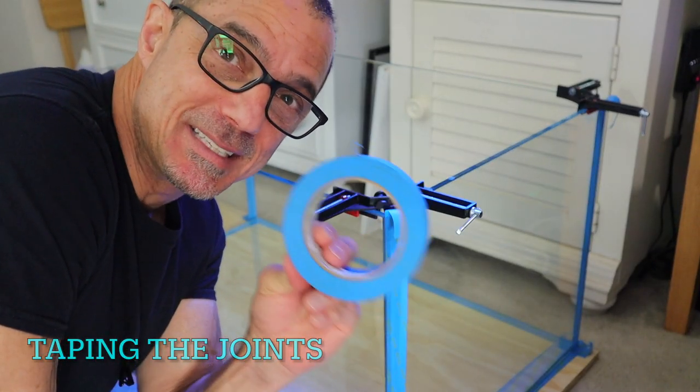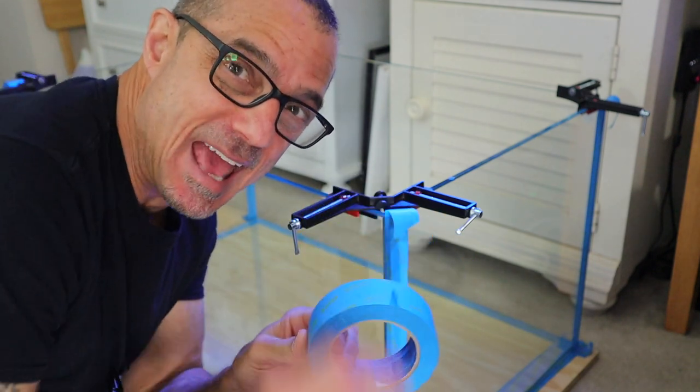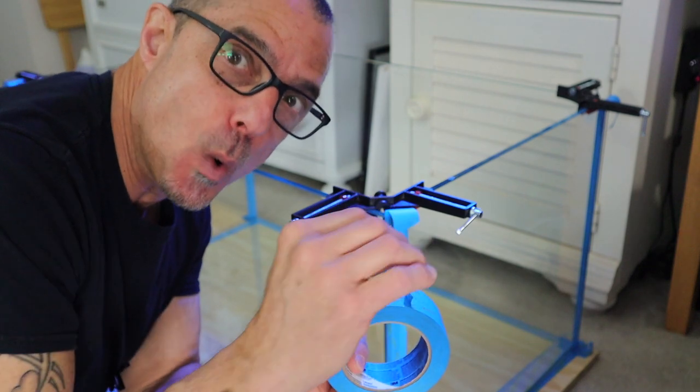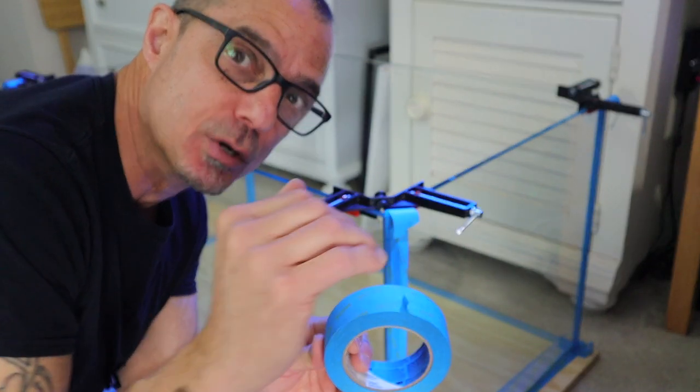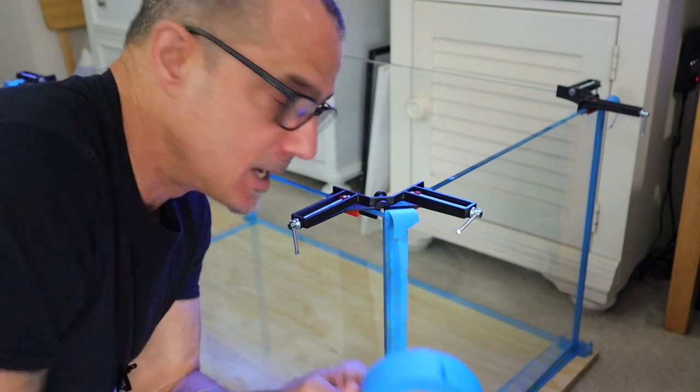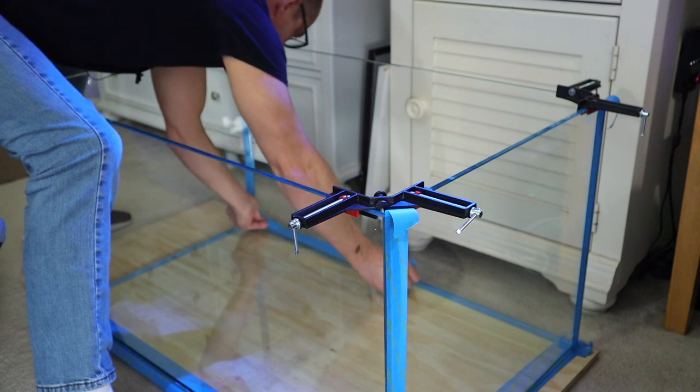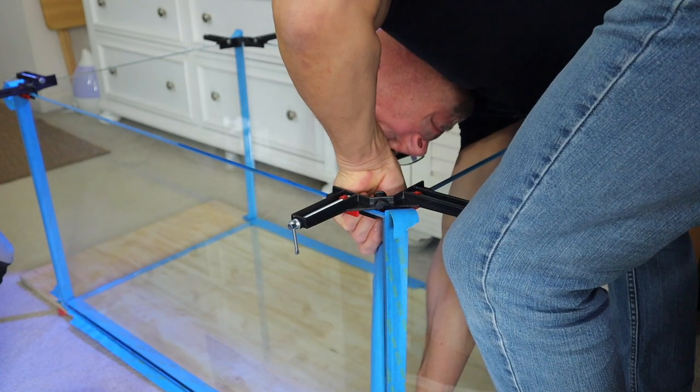All right, so this next part guys is really important. You want to tape the edges of the glass no more than about an eighth of an inch away from where the silicone will go into the joint. That's what I'm going to do now on the bottom and on the corners. I've been down this road before.